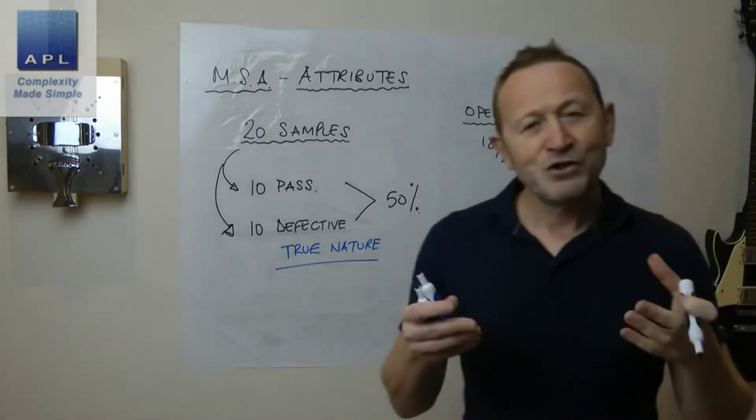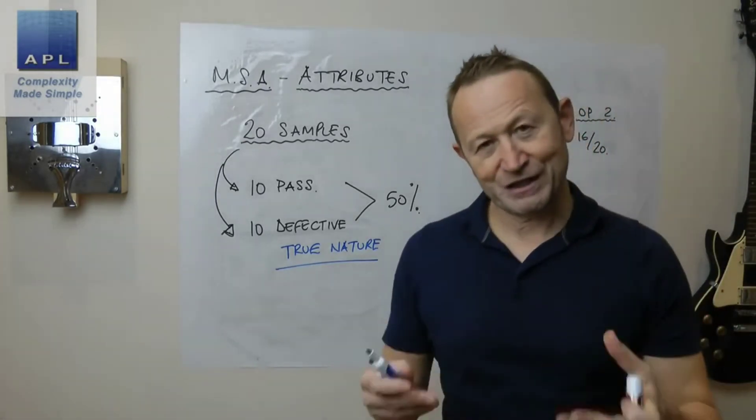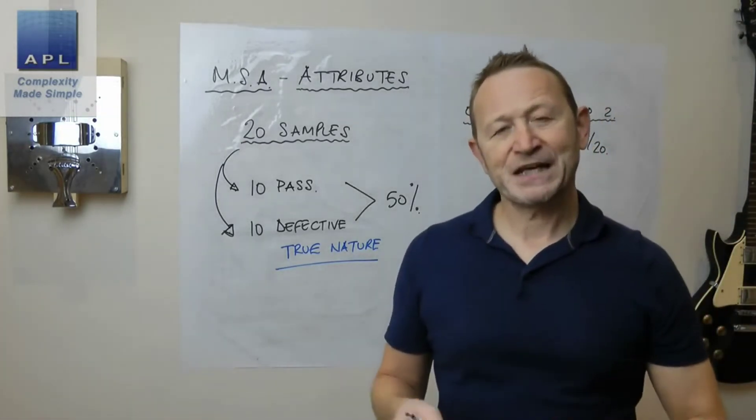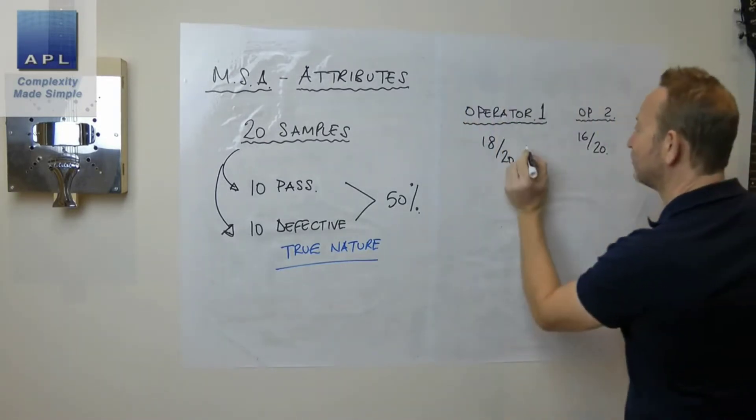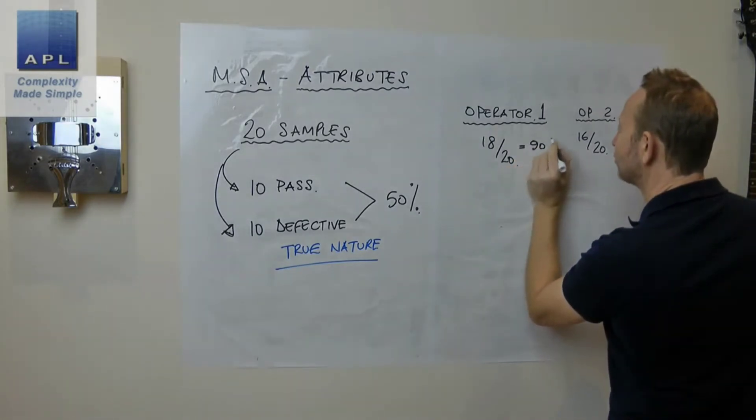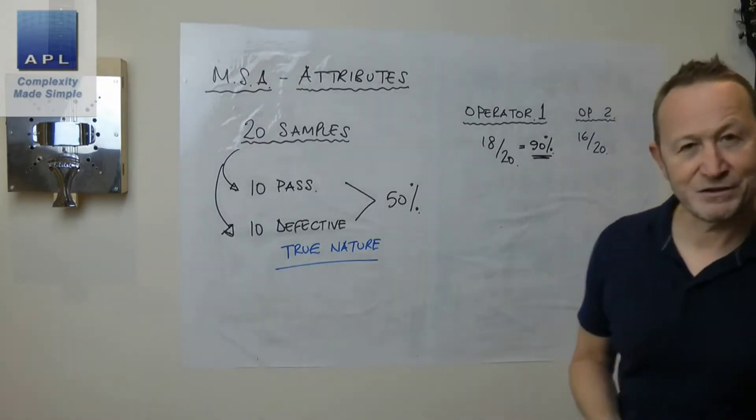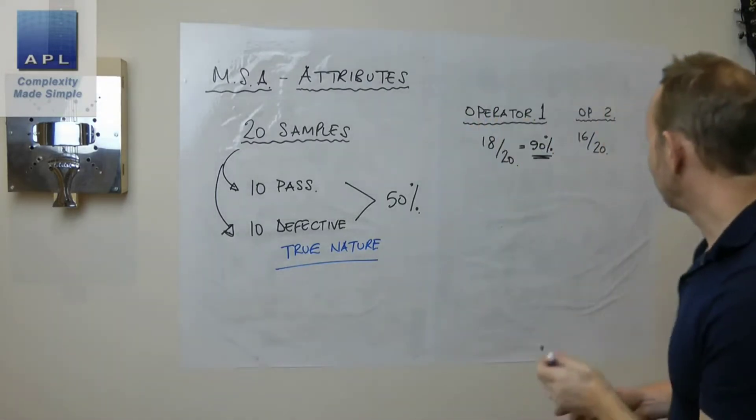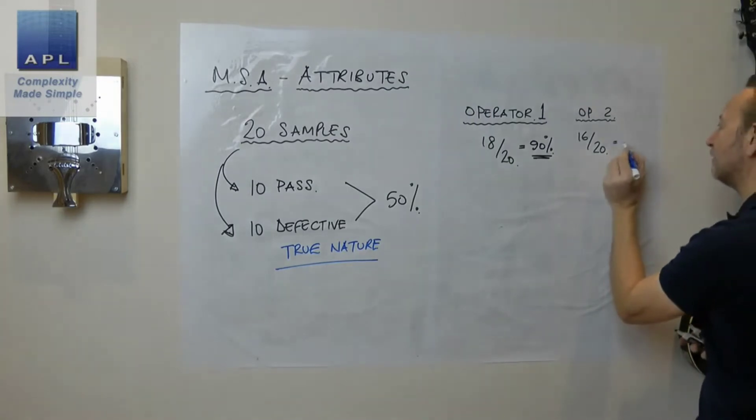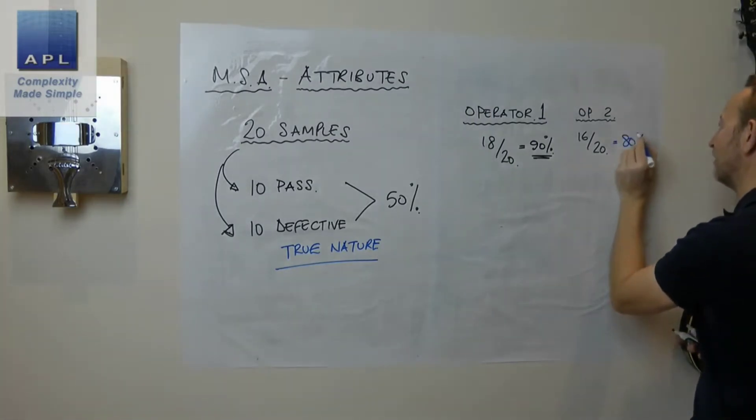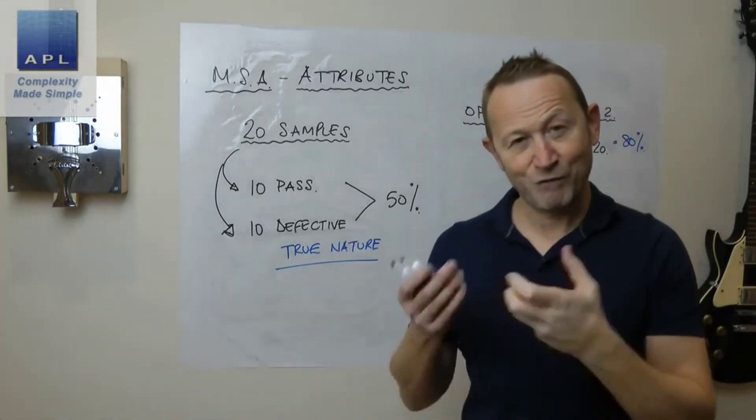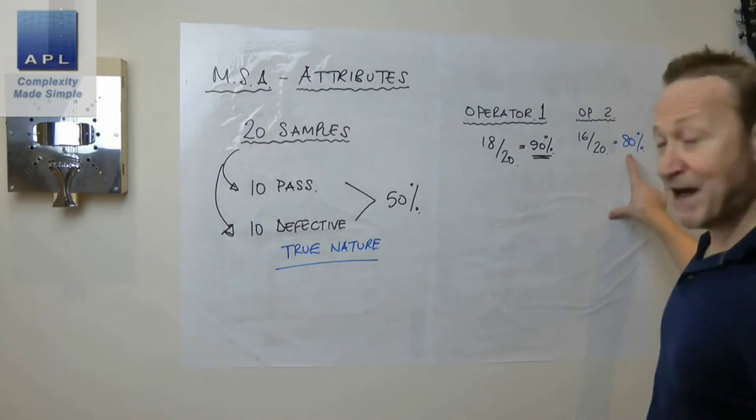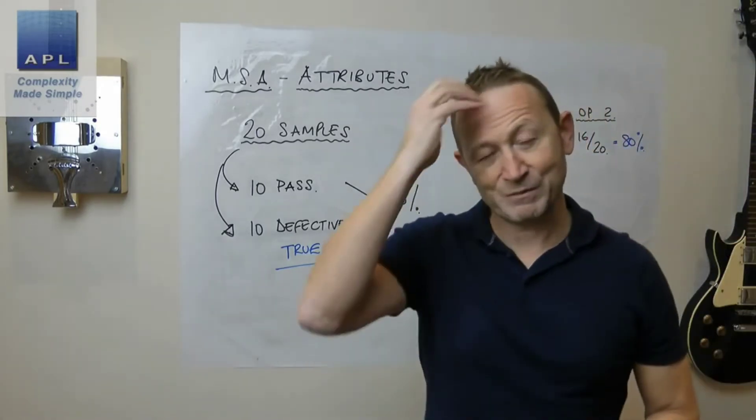So if operator one gets 18 out of 20 correct and operator two gets let's say 16 out of 20 correct, the first statistic that you're going to work out is what's their overall effectiveness. It's just a percentage, so in this case this system is 90% effective. It's very simple. This system over here is only 80% effective. So the first thing you're going to work out is the overall effectiveness of the system.